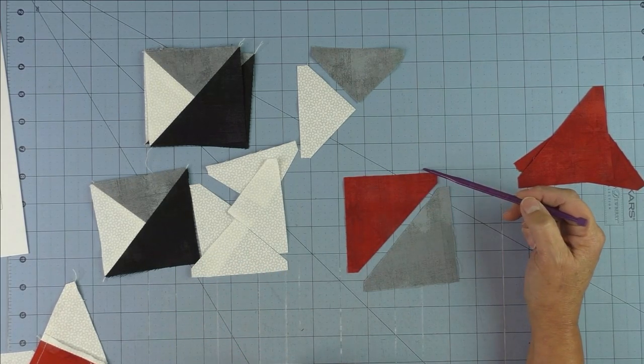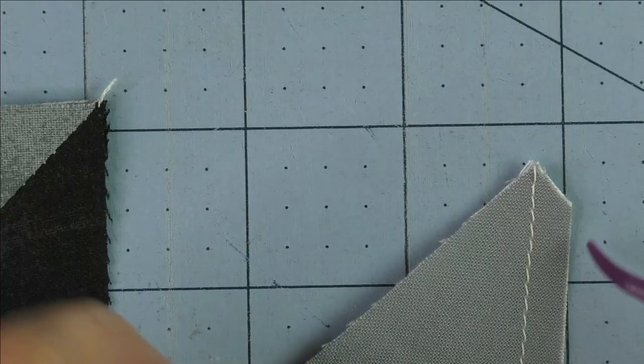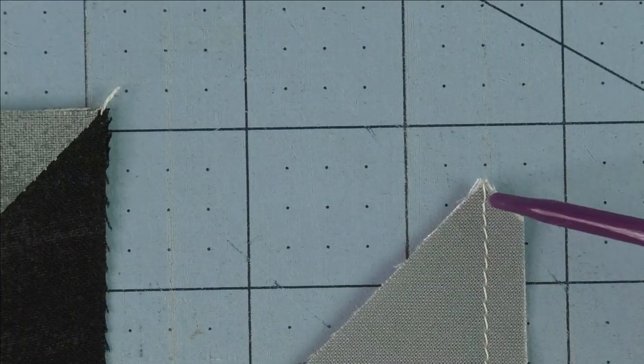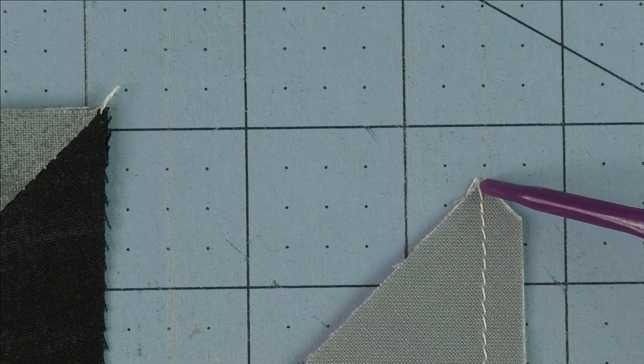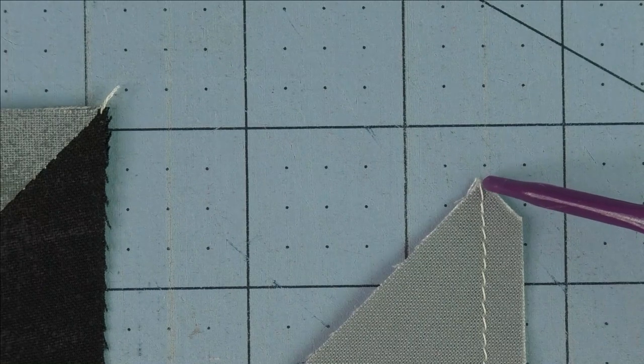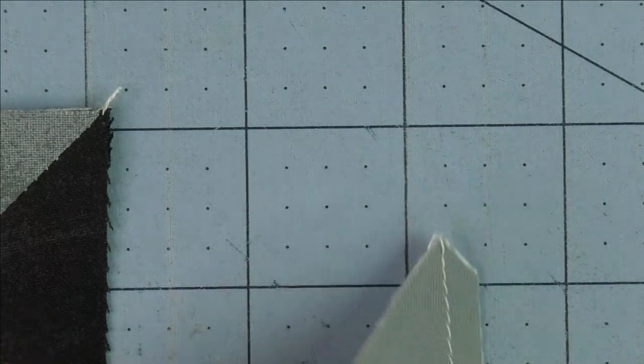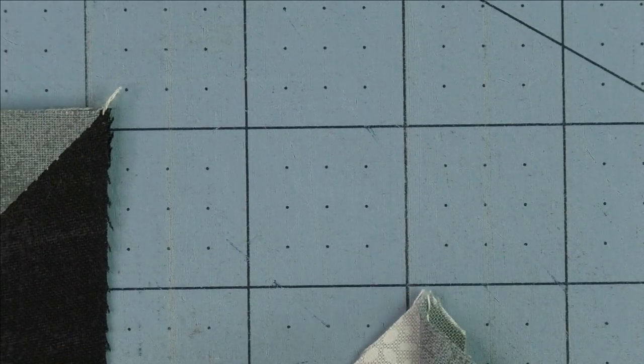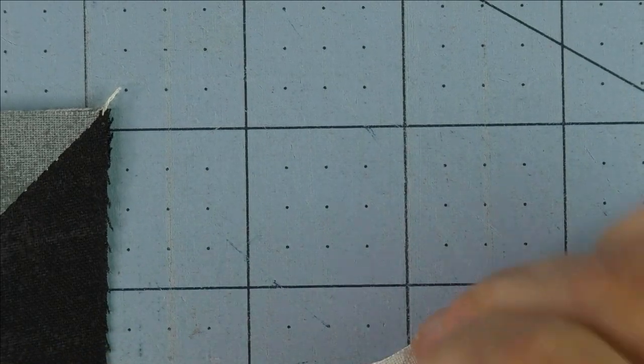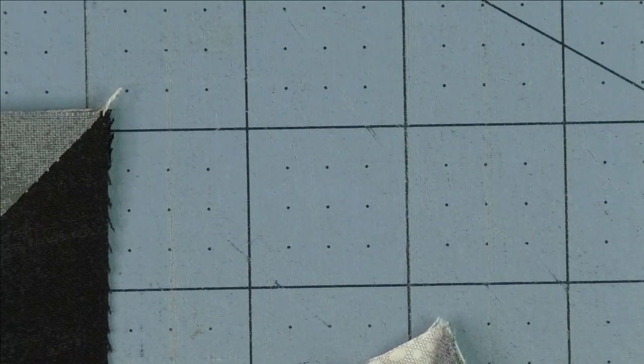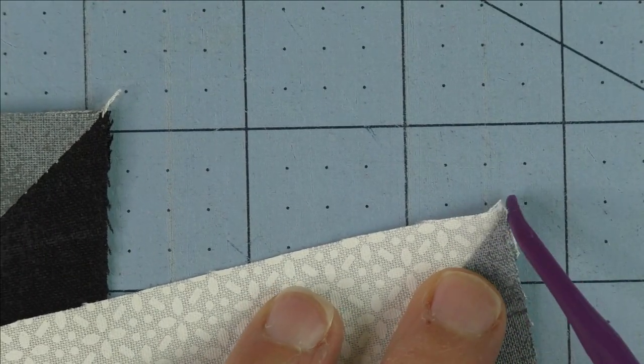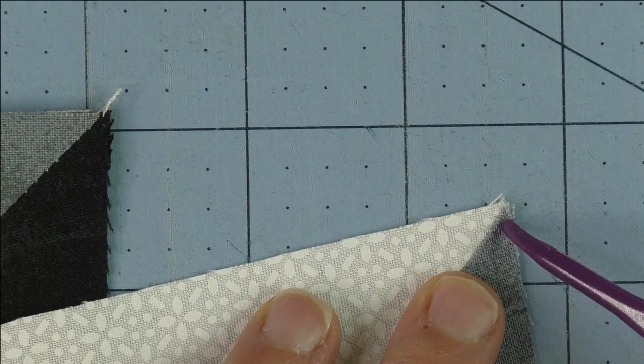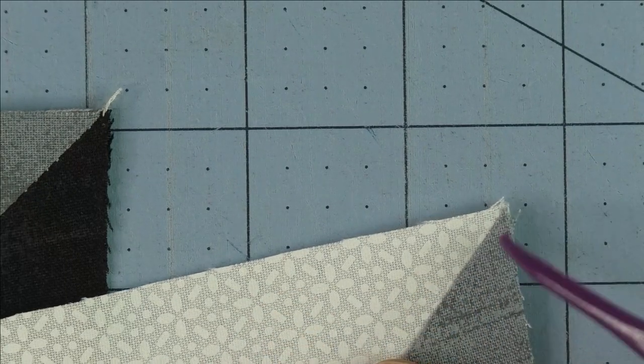If you are sewing with the AccuQuilt, because you have these dog ears cut off, you always want to end at the very point. That way, when you open this up and press it, you'll have a nice sharp point here, and your diagonal will end right in the point.